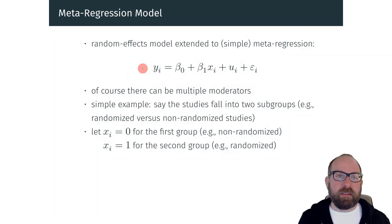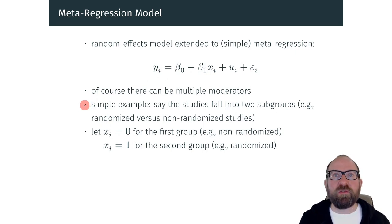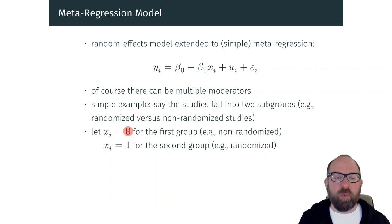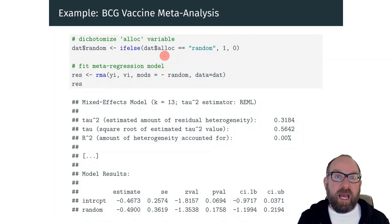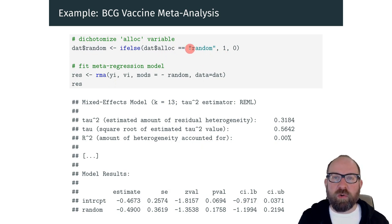To explore such heterogeneity, we can use meta-regression, where we use one or multiple moderators or study characteristics to examine if they're related to the size of the effects. To give a simple example, say the studies fall into two groups — the randomized versus non-randomized studies. We can represent this as a dummy variable, coded zero for the non-randomized studies and one for the randomized studies. The alloc variable in the dataset provides information about the method used for assigning participants to the treatment or control condition, and we create this dummy variable by coding it as 1 if the method of allocation was random and 0 otherwise.